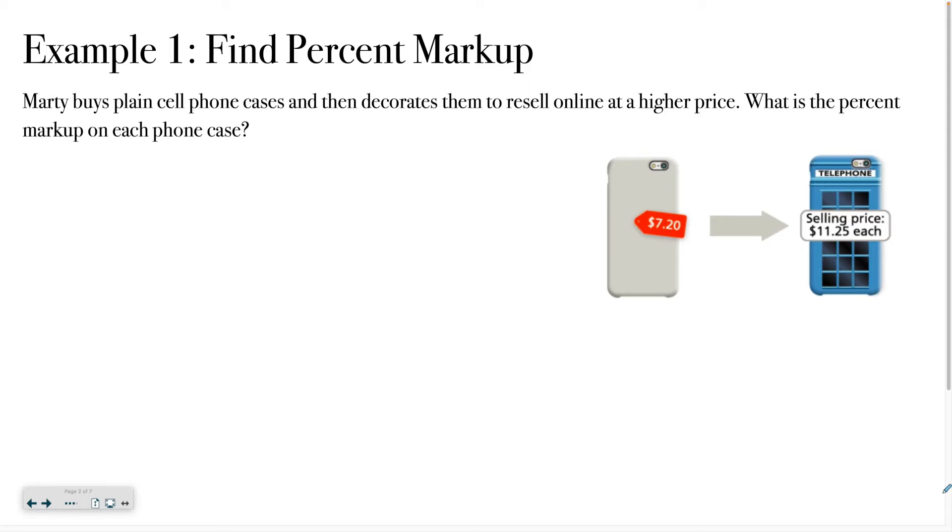Marty buys plain cell phone cases and then decorates them to resell online at a higher price. What is the percent markup on each phone case? You can see the plain phone case costs Marty $7.20, and then he's able to sell them for $11.25 each once he has decorated them.